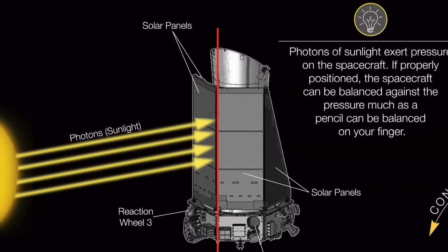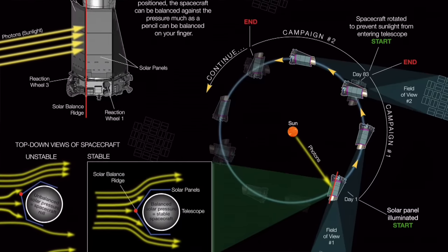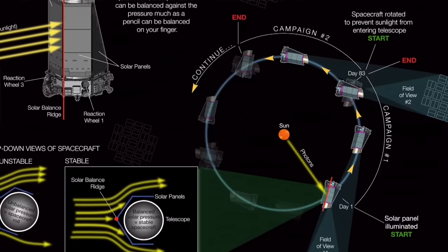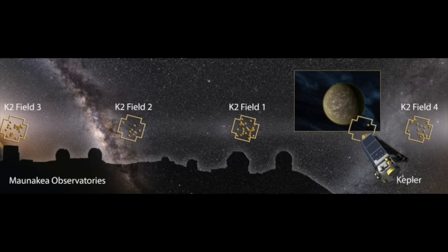This technique meant that it could look at other areas of the sky besides Cygnus, which was the area the Kepler mission was originally looking at for four years. So long as that new area of the sky was along the ecliptic plane, that is. This is the band of sky that lies in the plane of the Earth's orbit around the Sun.